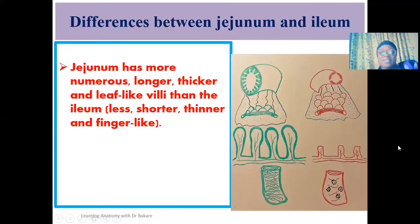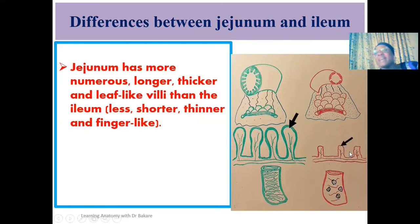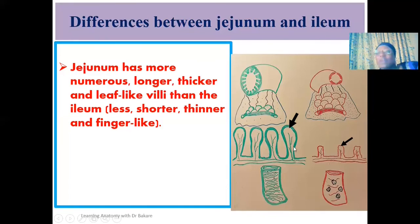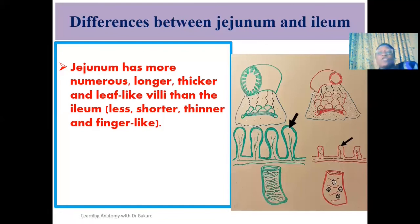The jejunum has more numerous, longer, thicker, and finger-like villi — the infoldings created within the mucosal lining. These villi in the jejunum are thicker, longer, and more numerous, which increases the surface area for absorption, since the majority of nutrients are absorbed in the jejunum. In the ileum, the villi are less in number, shorter, and thinner, because only specific nutrients are absorbed there, so the infoldings are not as pronounced.